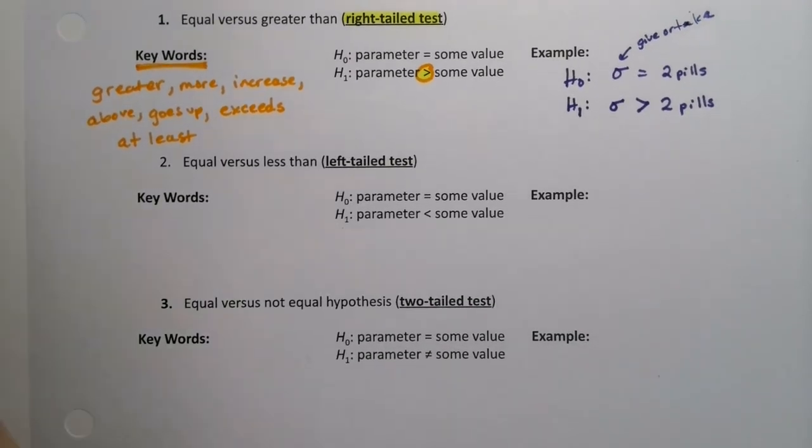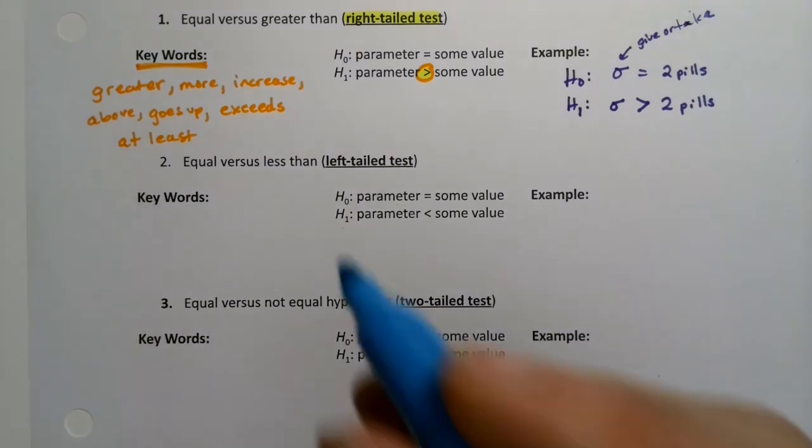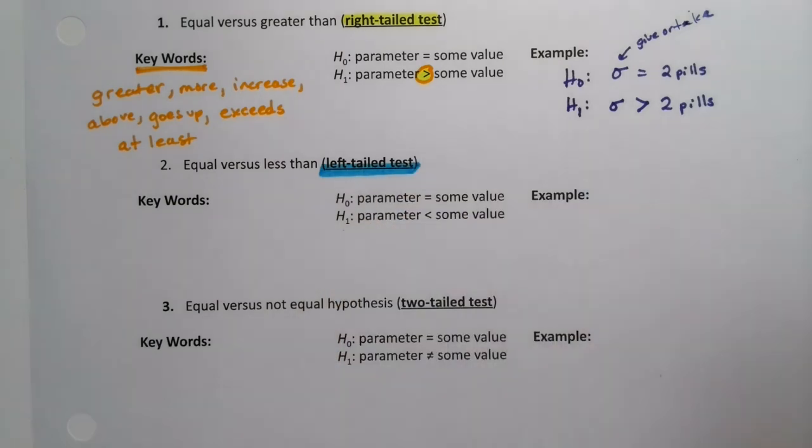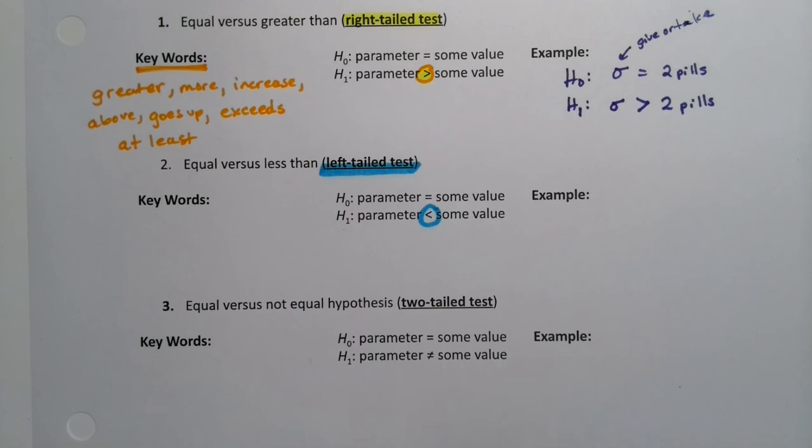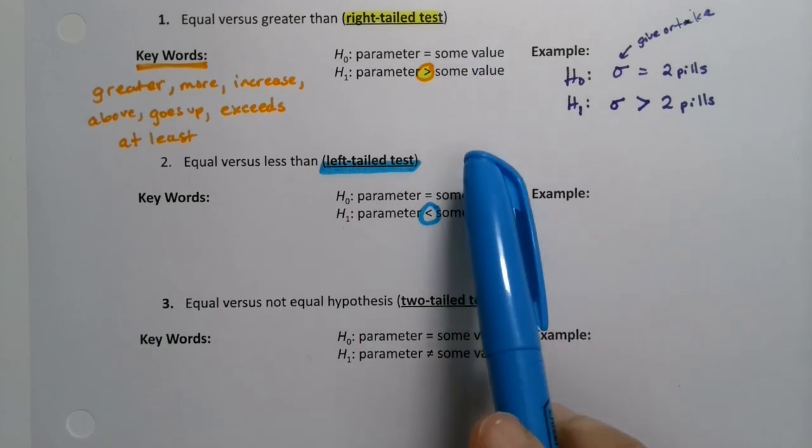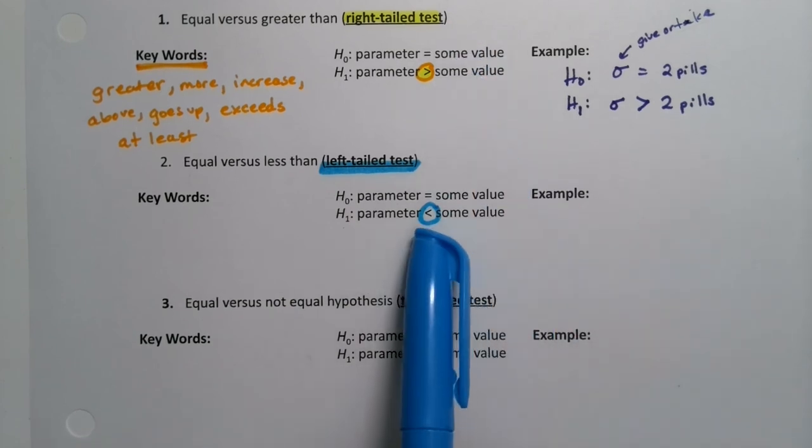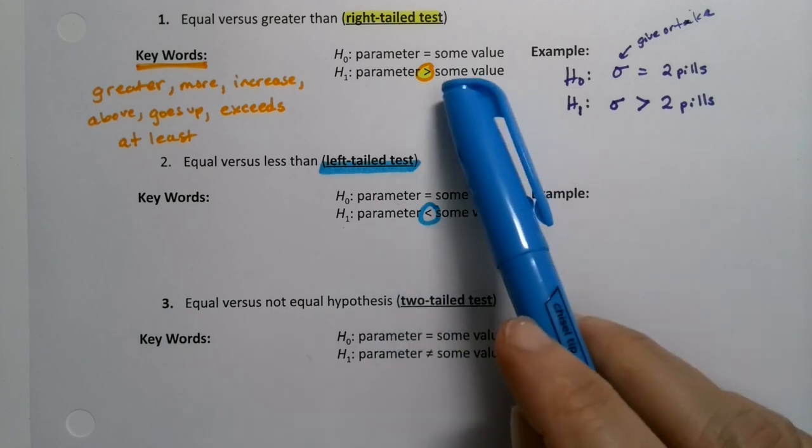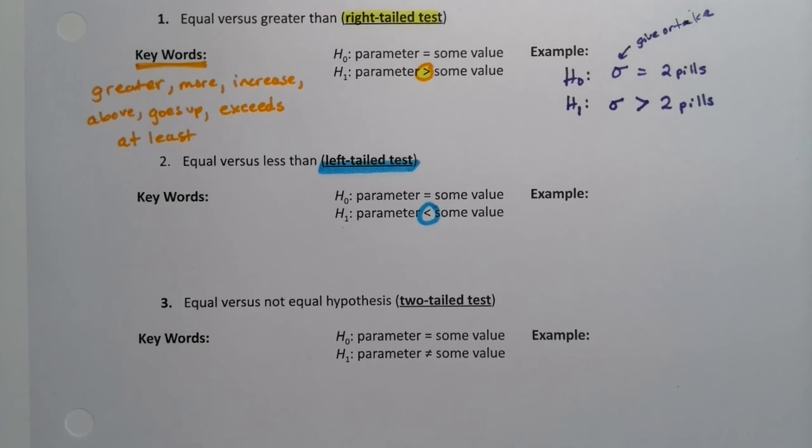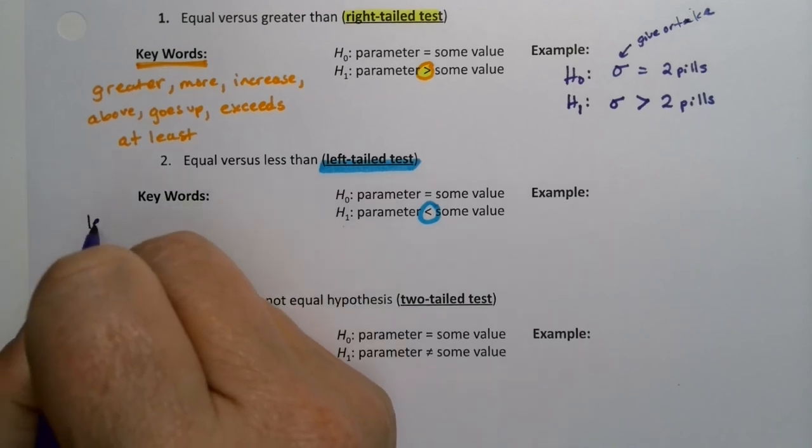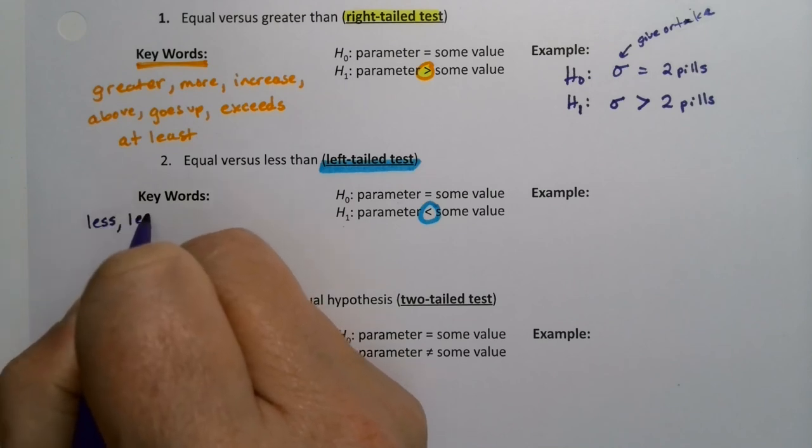What about left-tailed tests? A left-tailed test is a less than for the alternative. Notice that the null hypothesis always has equals. The alternative hypothesis is going to have a direction because the null hypothesis is assuming things are true unless you can prove it otherwise. Some words to look for would be, well, obviously less or lesser.